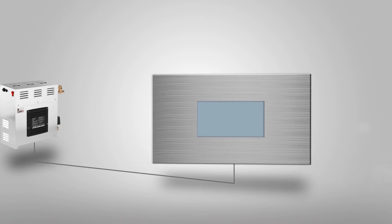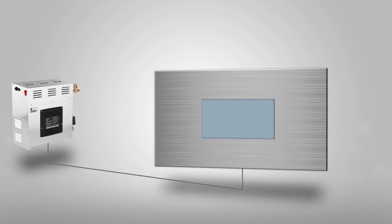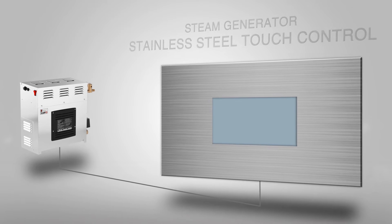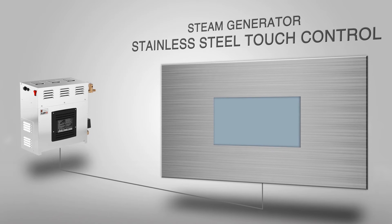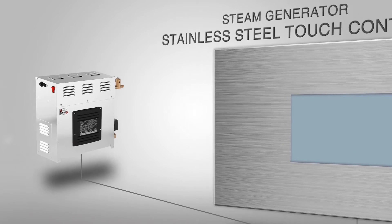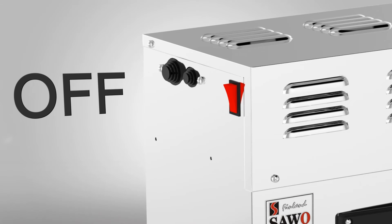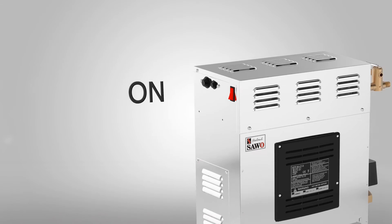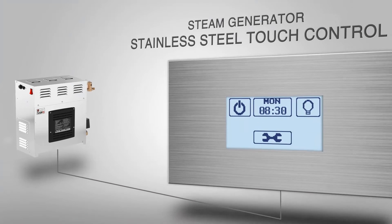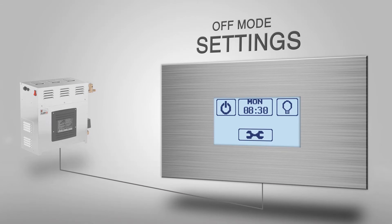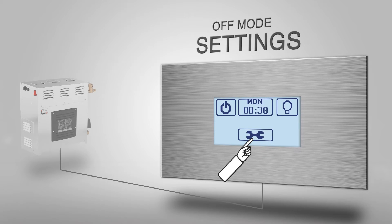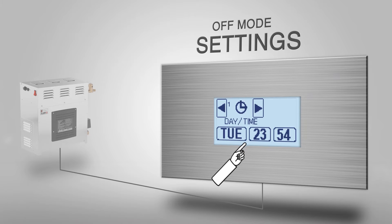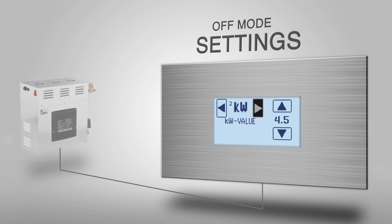In this video, we will introduce the basic commands of steam generator touch control. First, switch on the steam generator. To adjust the settings, long press the settings icon. A beeping sound will signal that it is possible to modify the settings.